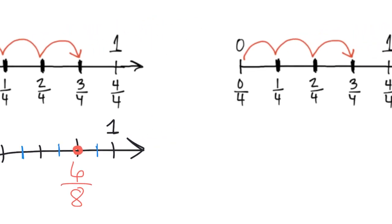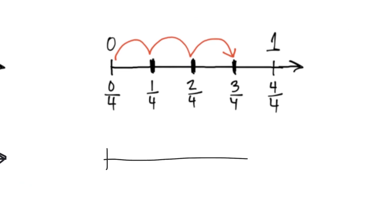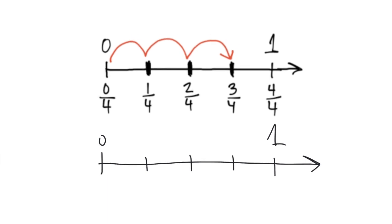Let's do the same thing here and draw our number line with zero, one fourth, two fourths, three fourths, and four fourths — so there's our one whole. If I wanted to figure out another name for that dot at three fourths, all I have to do is choose a number to cut each of these into. I'll cut each into three pieces using two lines. When I count the spaces: one, two, three, four, five, six, seven, eight, nine, ten, eleven, twelve. So that fraction is now nine twelfths.